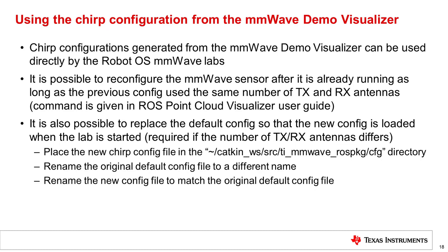There are two ways to use the chirp configuration. In the first way, it's possible to reconfigure the millimeter wave sensor after it is already running, as long as the previous config which was used to start up the device used the same number of transmit and receive antennas. The command to perform this is given in the ROS point cloud visualizer lab user guide. The second method is to replace the default config so that the new config is loaded whenever the lab is started. This is required if the number of transmit and receive antennas differs from the original default configuration.